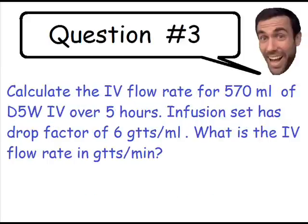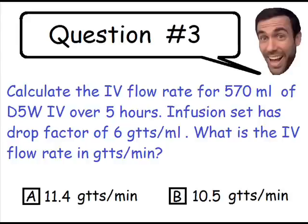Question number three. Calculate the flow rate for 570 milliliters of solution over five hours. If the infusion set has a drop factor of 6 drops per milliliter, what is the flow rate in drops per minute? You can choose between A, 11.4 drops per minute, or B, 10.5 drops per minute.